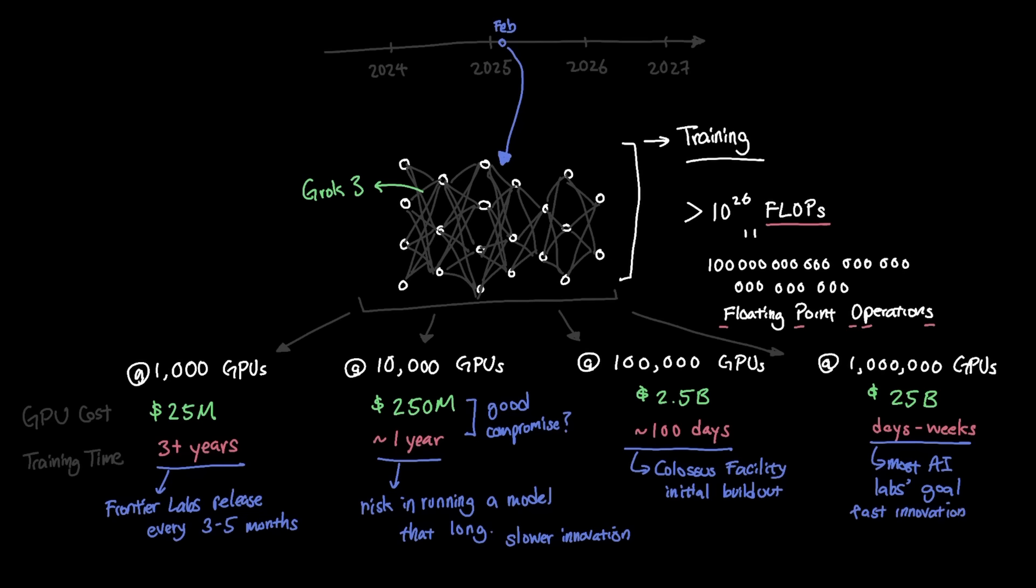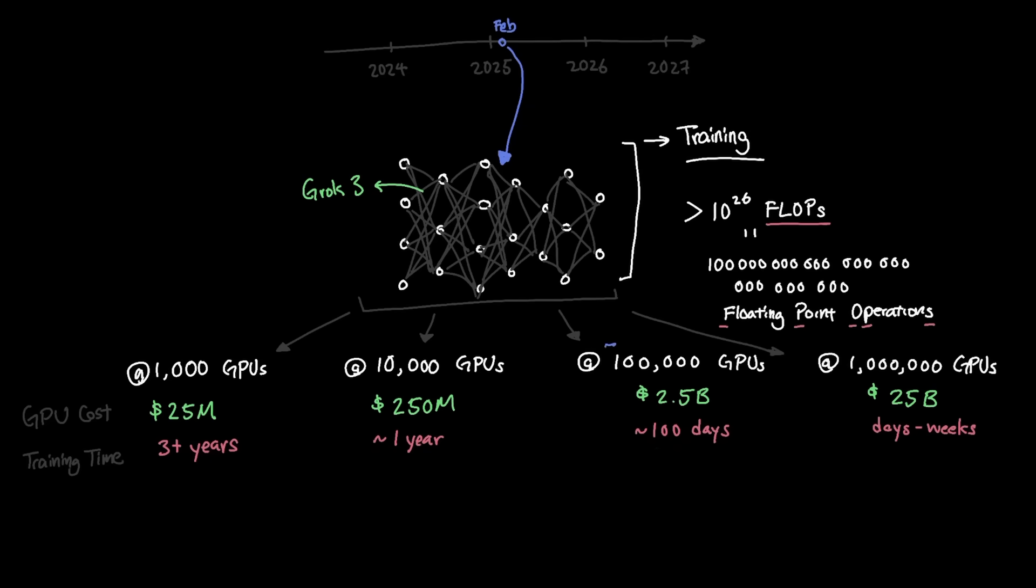For xAI's case, they're currently at 200,000 GPUs but aiming to get to 1 million GPUs in the near future. So as you can see, this is the price of admission to even start competing against other frontier labs like OpenAI and Gemini.